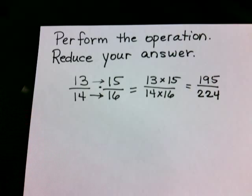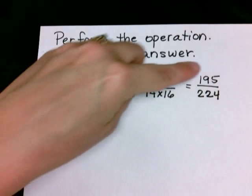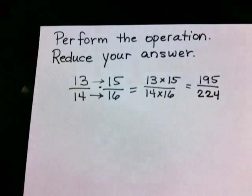Now the problem did ask us to reduce our answer if we can. And since 13 is prime, 15 is only divisible by 5 and 3, we know that those are the numbers that 195 is divisible by. And 224 isn't divisible by any of those. So this is our final answer.